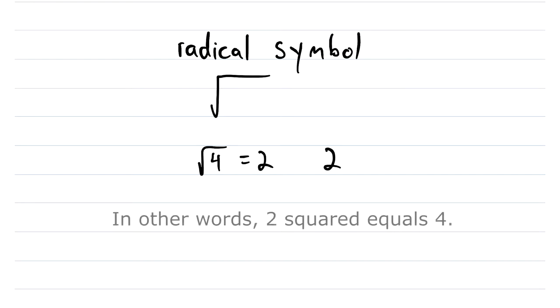So you're probably familiar with this symbol here. This is the radical symbol. It's most commonly used for square roots, like the square root of 4 is equal to 2, because 2 times 2 is equal to 4.